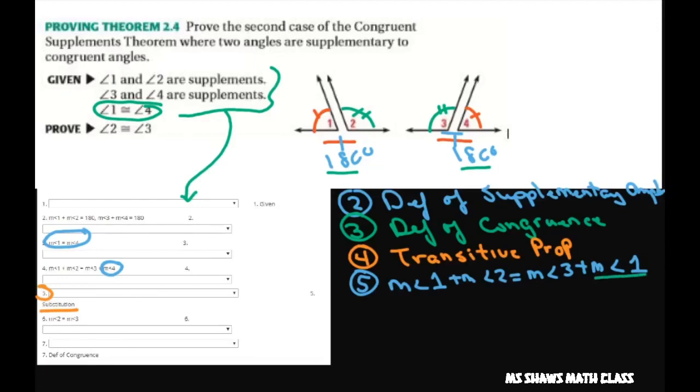Number six, it says the measure of angle 2 equals the measure of angle 3. And that's because I subtracted the measure of angle 1 from both sides of the equation. So that's going to be the subtraction property.